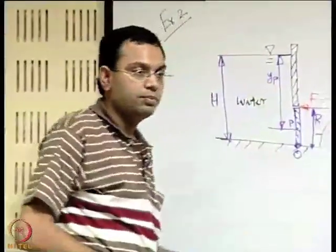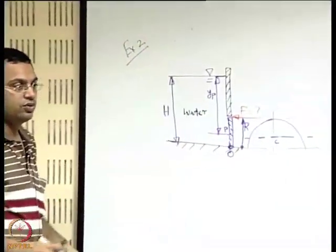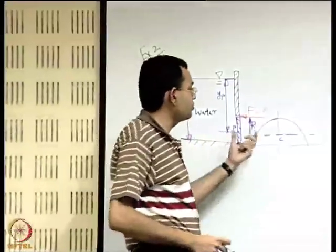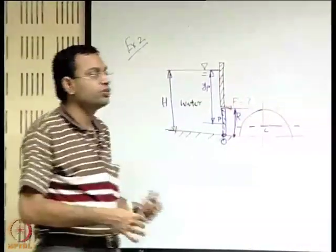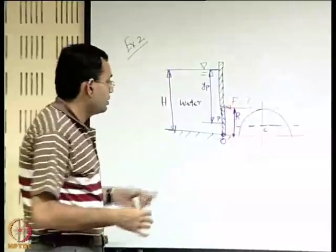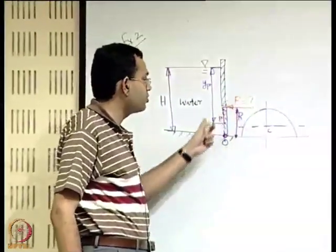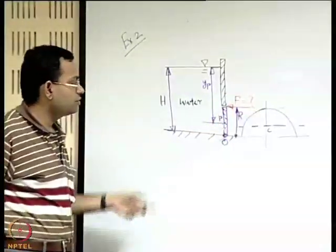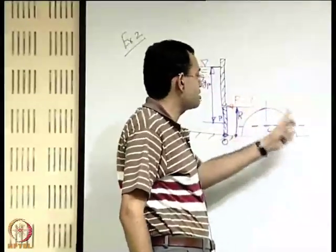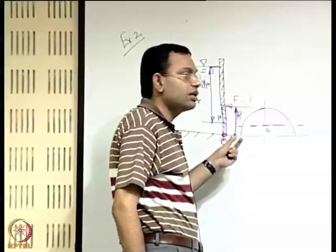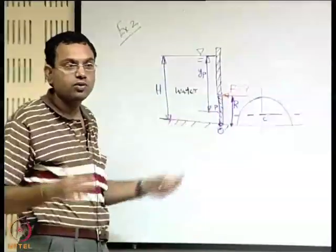We continue with our discussion on force on a plane surface submerged in a fluid. We take up the same example from the last class and will try to find the force on the surface by direct integration without using the standard expression for force. The objective is to find the force required to keep the gate stationary by finding the moment of the distributed forces acting on this semicircular plate with respect to the hinge point O, for the rotational equilibrium equation.